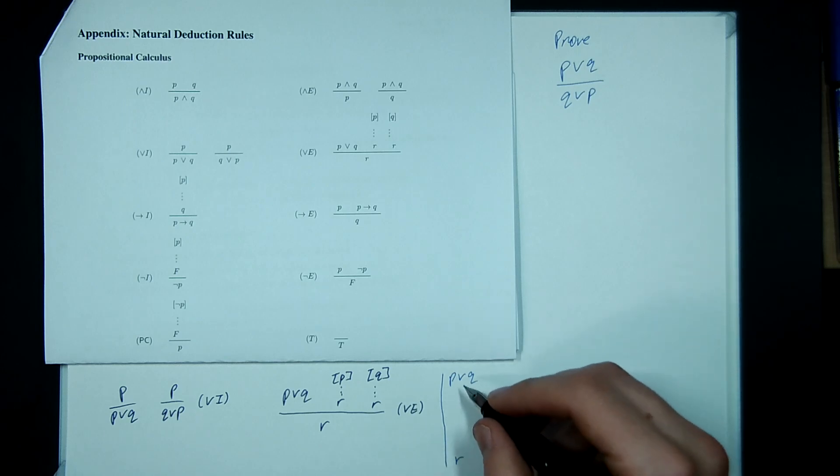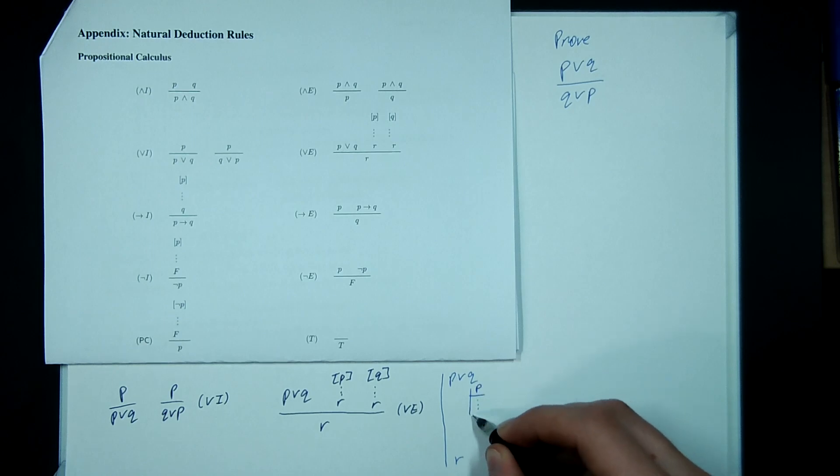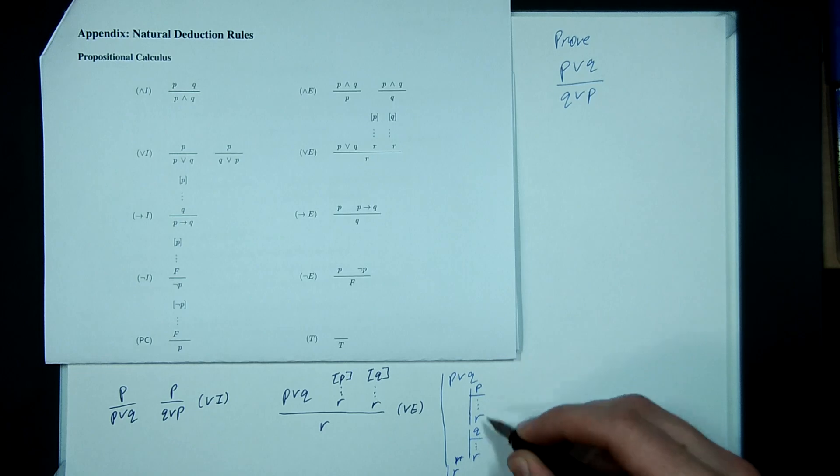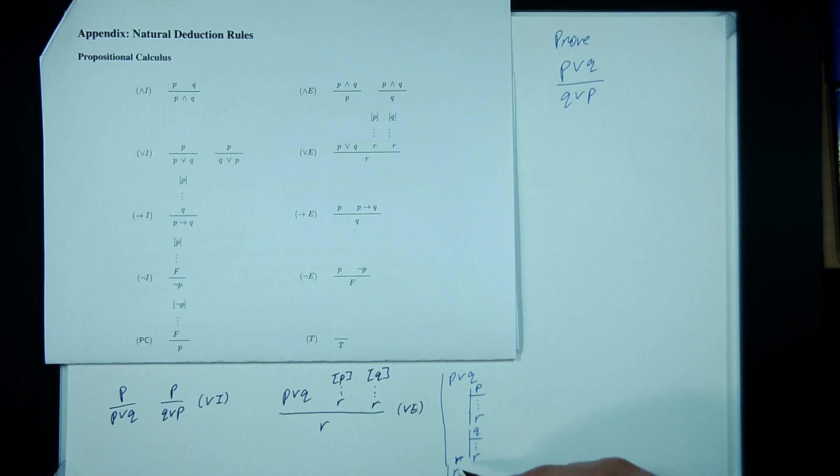So we saw the proof by cases. We assume P to be true and do some stuff and obtain R. So that's one case. And separately, we assume Q to be true, do some stuff and obtain R. Aha! In either case, it worked. If I assume P, I got R. If I assume Q, I got R. Therefore, R by OR elimination, because I know one of these guys has to be true.